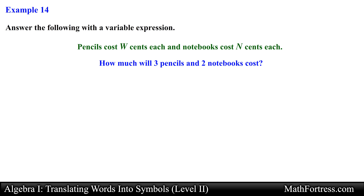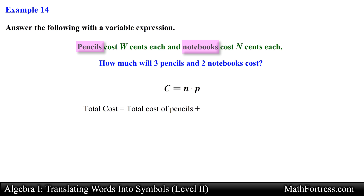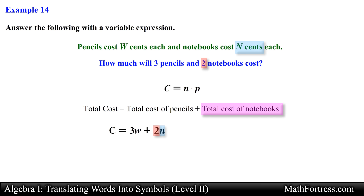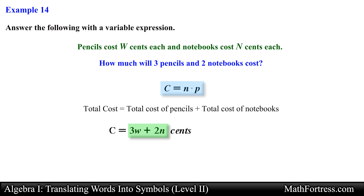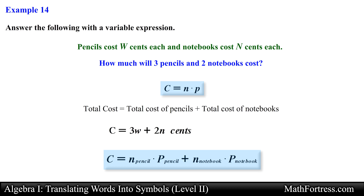Let's try the next one: 'Pencils cost w cents each and notebooks cost n cents each. How much will 3 pencils and 2 notebooks cost?' This is an application of the cost formula c = n × p. Since we have two distinct items, we find the total cost of each separately and add them. The total cost of pencils is 3w, the total cost of notebooks is 2n, so the total cost is 3w plus 2n cents. Make sure you understand the problem before blindly applying a formula.